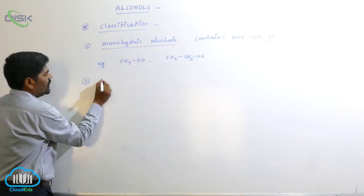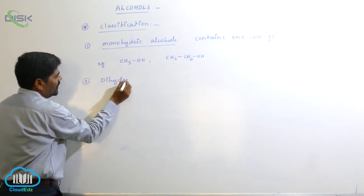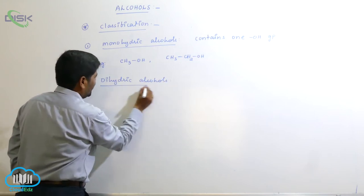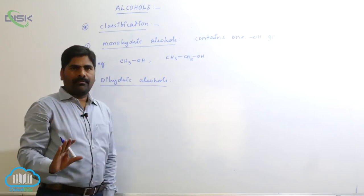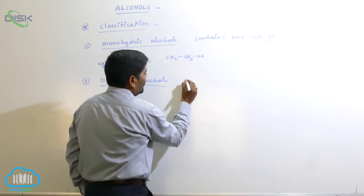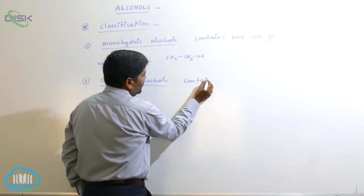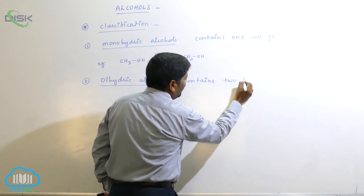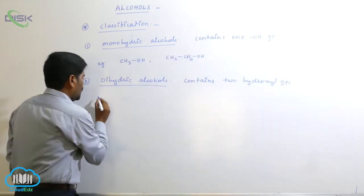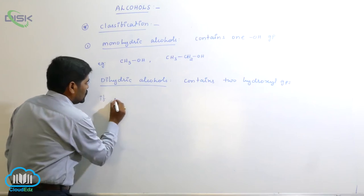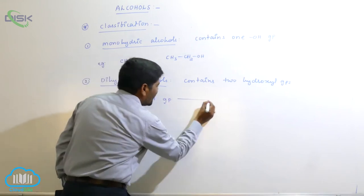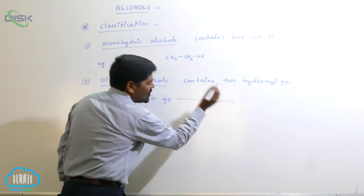The second classification is dihydric alcohols. Dihydric alcohols contain two OH groups, which can be present on the same carbon or on adjacent carbon atoms. They contain two hydroxyl groups.